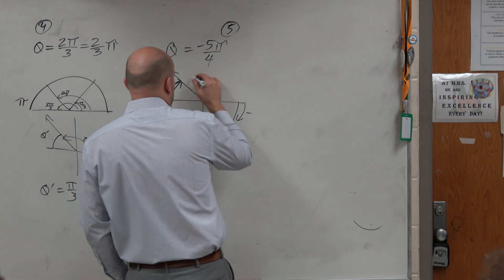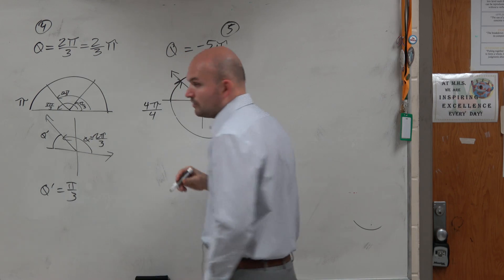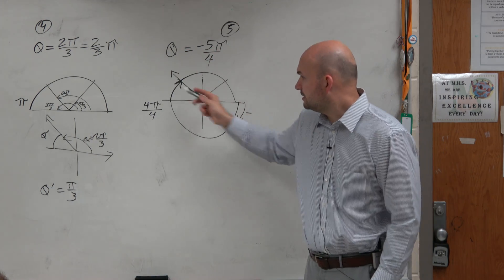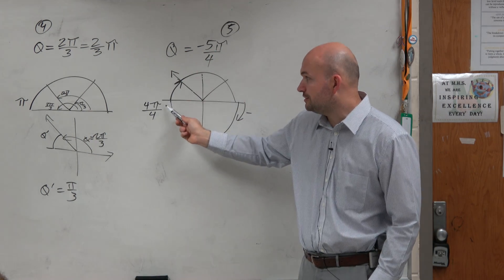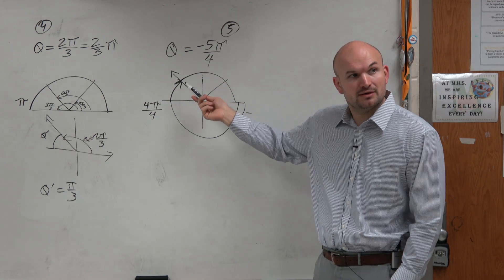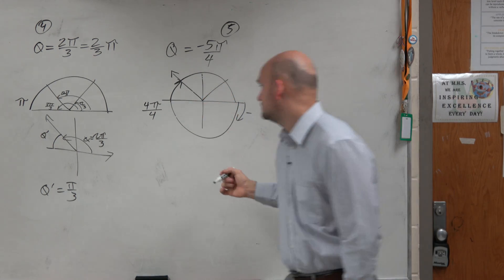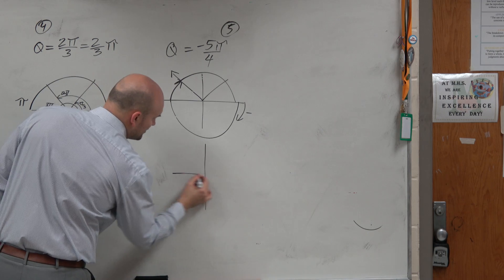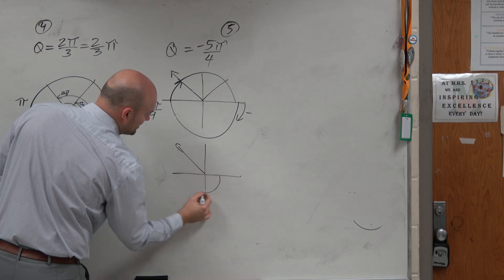I mean, you could break this up if you wanted to into fourths. And you're just going, you already know this is 4π over 4, and you just need to go an extra π over 4, right? So the angle in standard form would probably just look a little bit more like this.